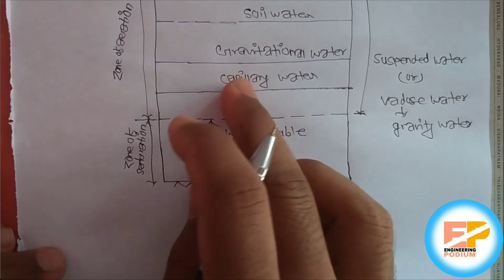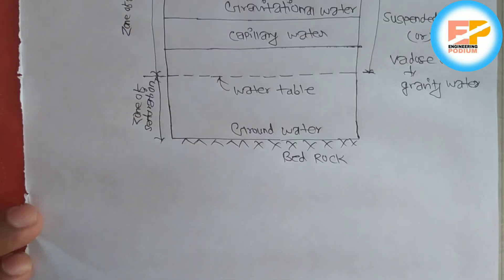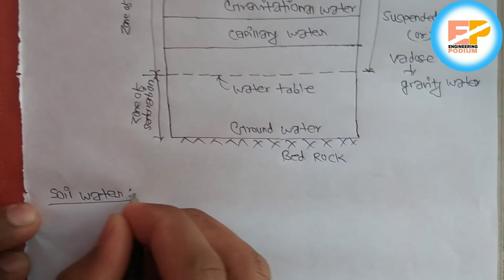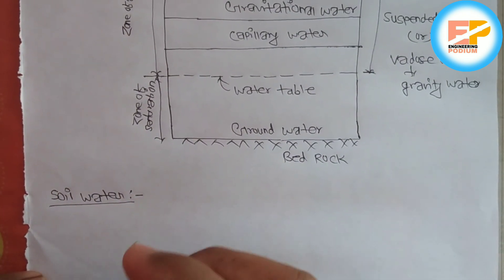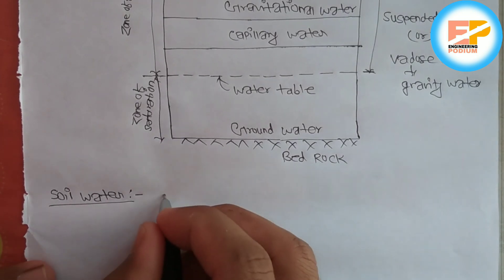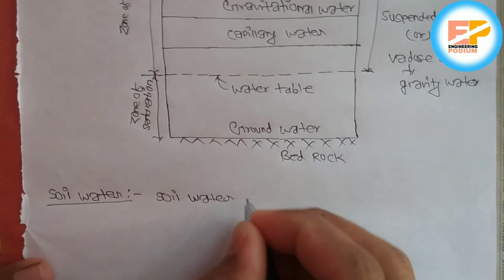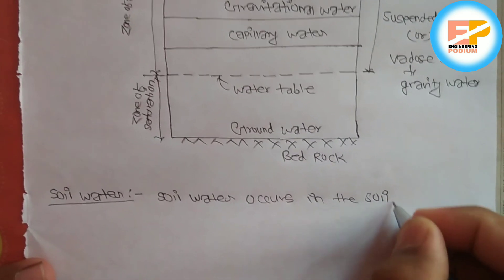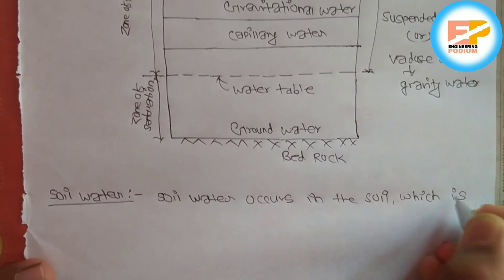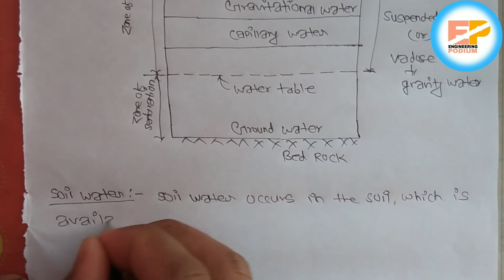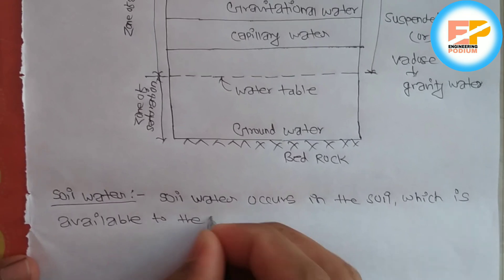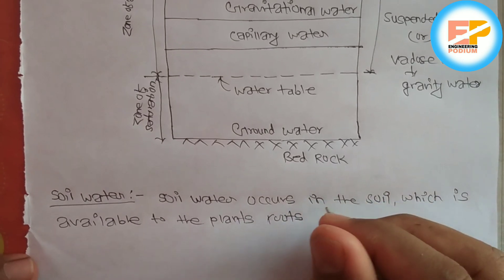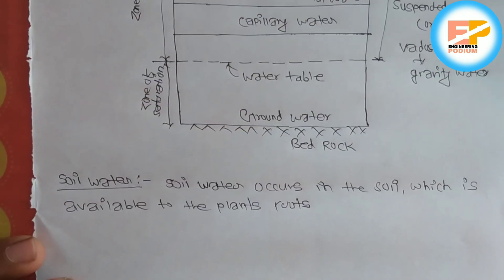So let me define soil water first. Soil water occurs in soil which is available to the plant roots, or you can say vegetation occurring on the surface.